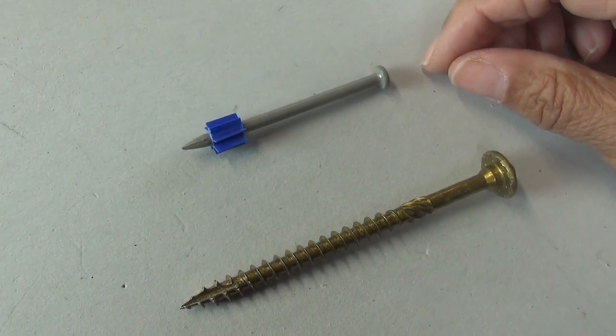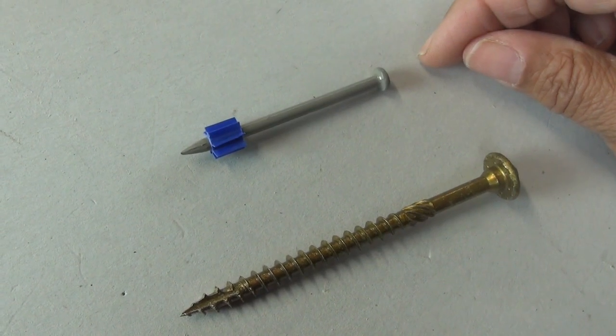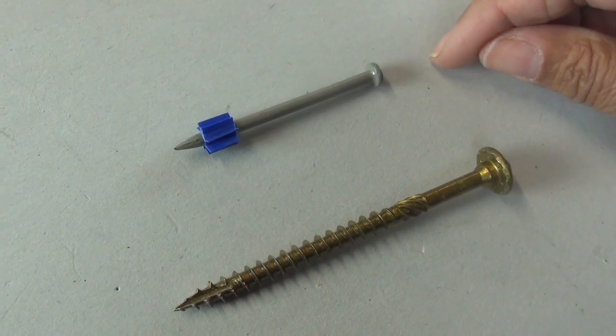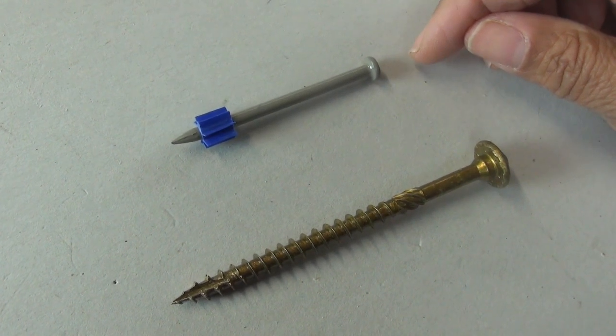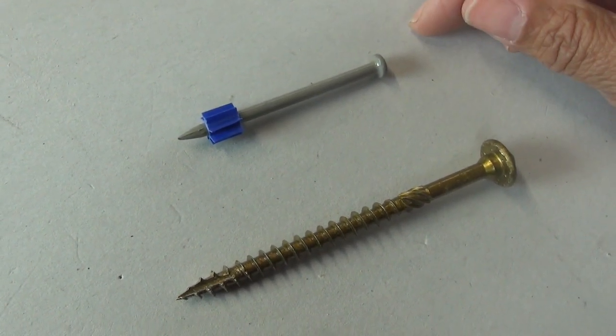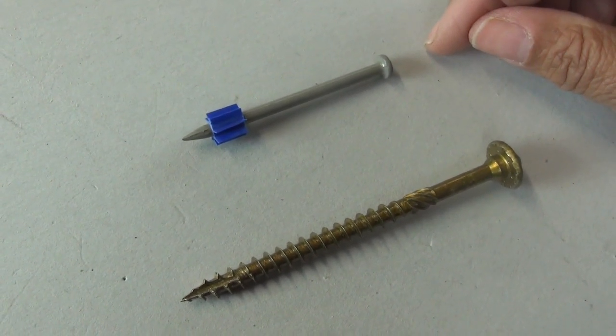You use a tool called a powder-actuated tool to drive the nail in, usually in steel or concrete or block.